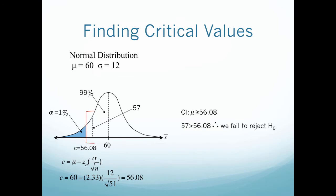So we know that since it is greater than my critical value, we will fail to reject H0. Or since it is within my confidence interval, I would fail to reject H0. Meaning that we are 99% confident that our true value of our test average is going to be greater than or equal to 56.08. So we're not going to reject our null hypothesis based on a 57% test score.